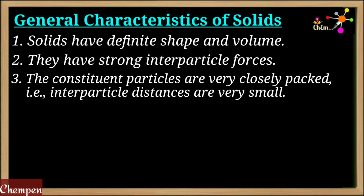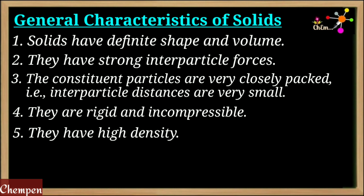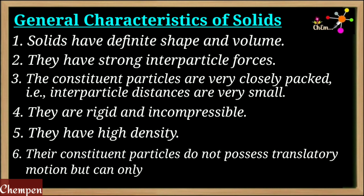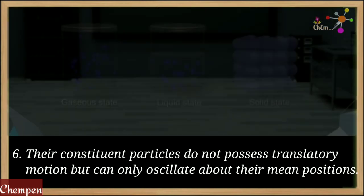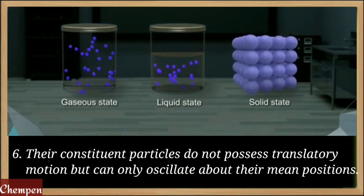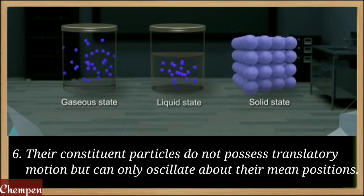In gases, molecules can move in every possible direction. In solids, particle-particle distances are very, very small and solid substances are rigid and incompressible due to the same reason. They have high density. The constituent particles do not possess translatory motion in solids — they only oscillate about their mean position.